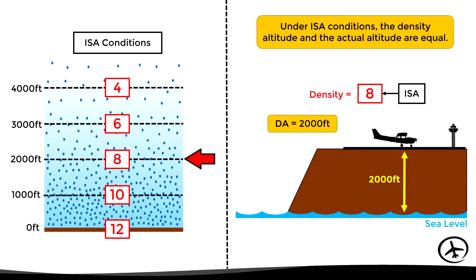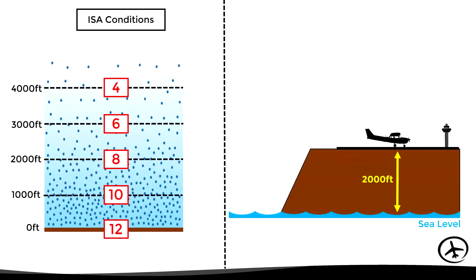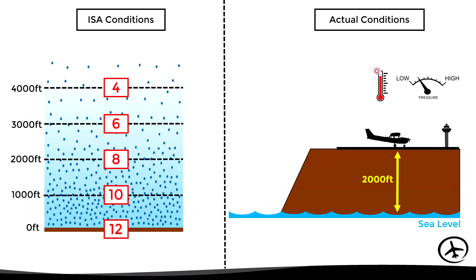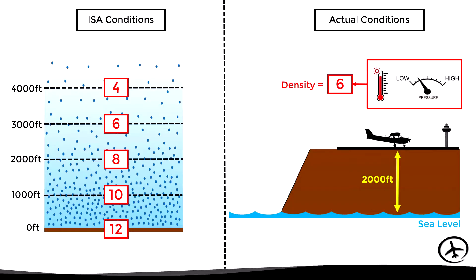Now let's see what happens if the airport has higher than standard temperature and lower than standard pressure. The combination of these factors will reduce air density — suppose it results in a density of 6. Looking for this value in the ISA model, we find it at 3,000 feet. Therefore the airport has a density altitude of 3,000 feet, although the actual elevation is 2,000 feet, meaning aircraft performance will behave as if flying at 3,000 feet.